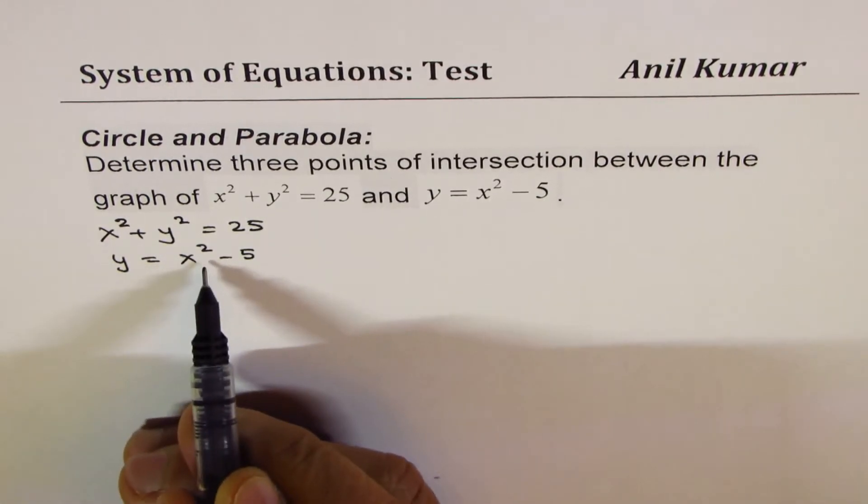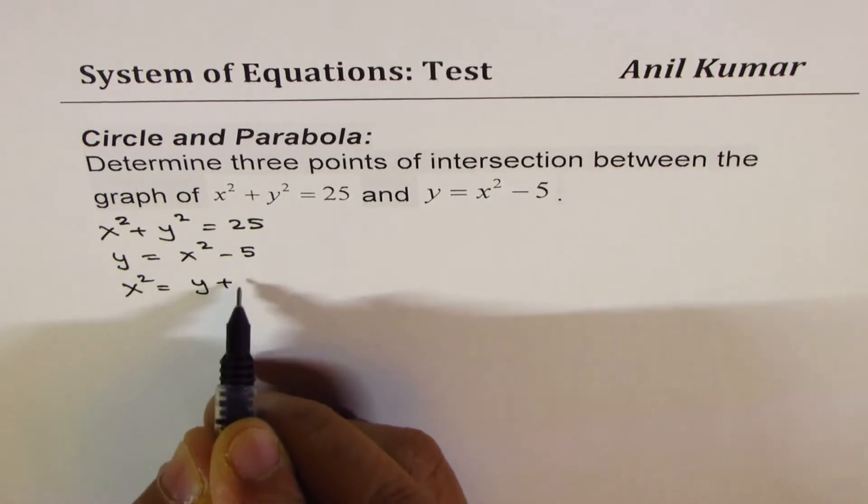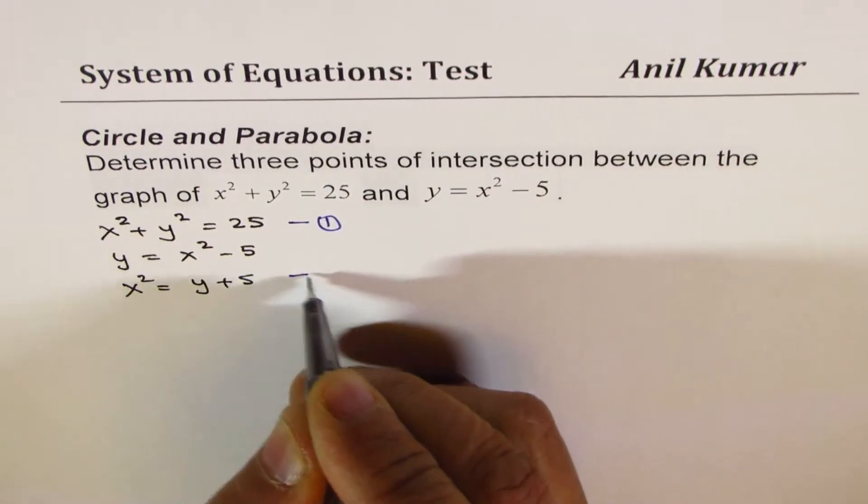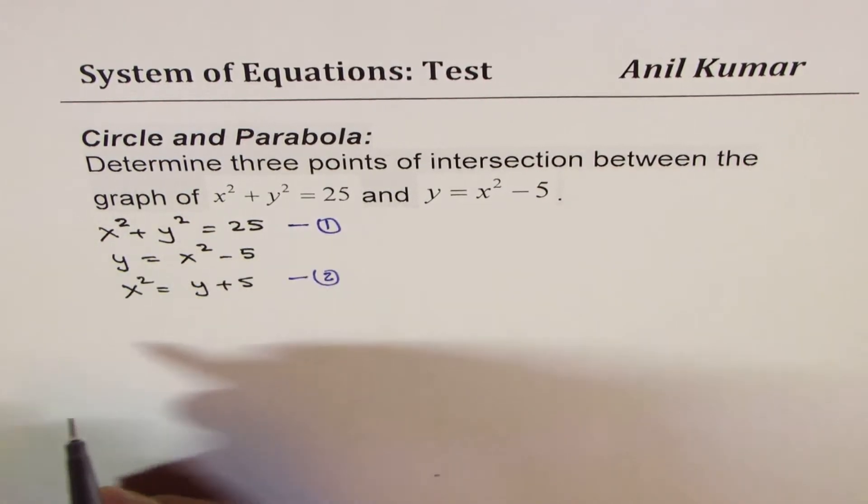We can isolate x squared from the second equation. It gives us x squared equals y plus 5, bringing this 5 to the left side. And now we can substitute from equation 2 the value of x squared in equation 1.